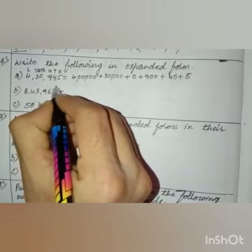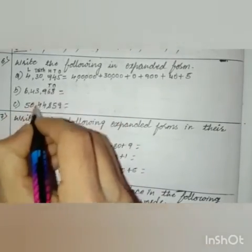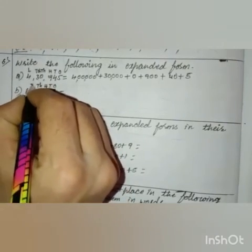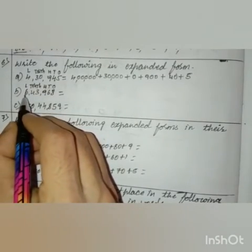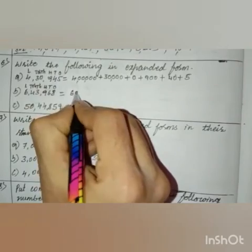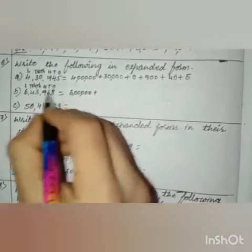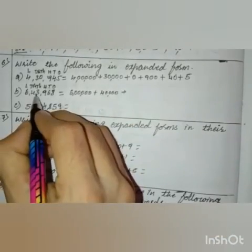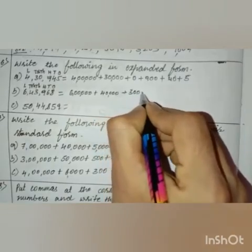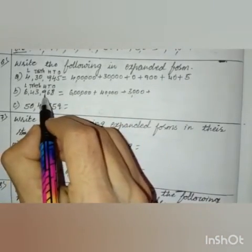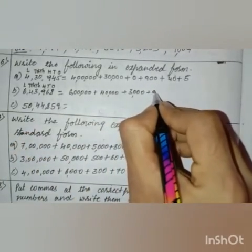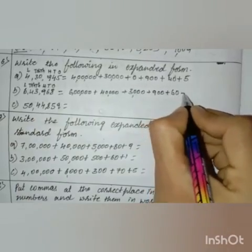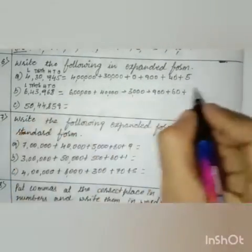Question number B. 8 is in the ones place, 6 is in the tens place, 9 is in the hundreds place, 3 is in the thousands place, 4 is in the ten-thousands place, 6 is in the lakh's place. So 6 into 1,00,000 is 6,00,000, plus 4 into 10,000 is 40,000, plus 3 is in the thousands place so 3 into 1,000 is 3,000, plus 6 into 10 is 60, plus 8 into 1 is 8.